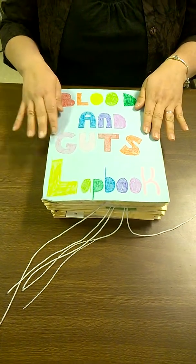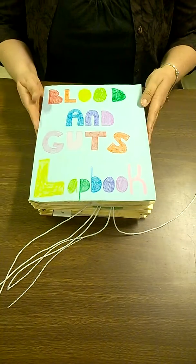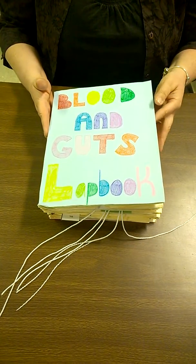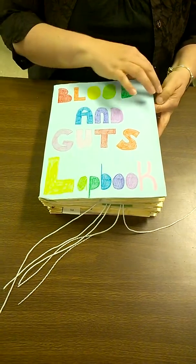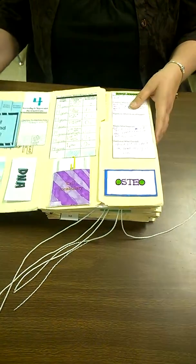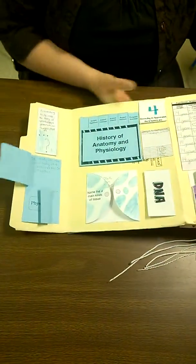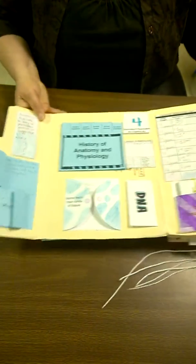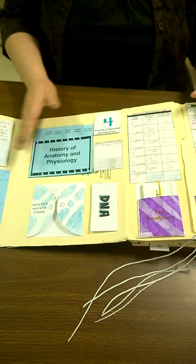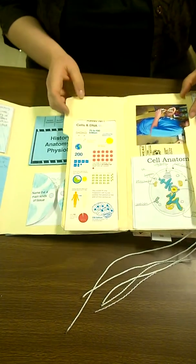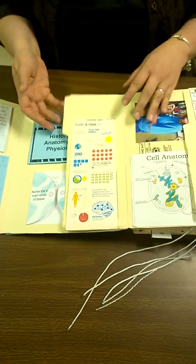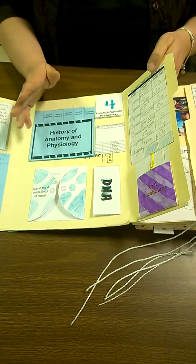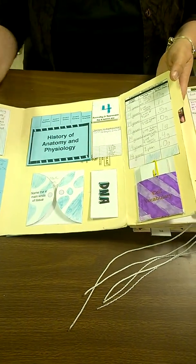Okay, this is our blood and guts lapbook that we have been putting together all year using Apologia's anatomy and physiology. The first part of the book, which if I could do it over again, I would actually make this into one section instead of two. The cells could all go with lesson one in one section, but I was learning as I was going and creating this as I went.